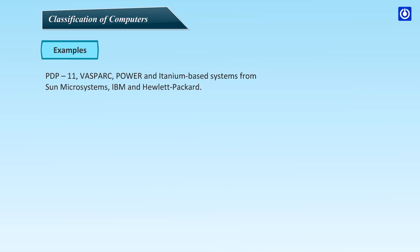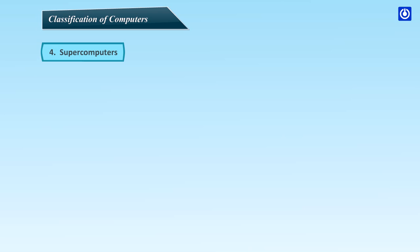Examples of Minicomputers include PDP-11, VASPARC, and Power and Itanium-based systems from Sun Microsystems, IBM, and Hewlett-Packard.